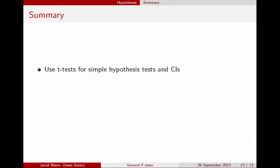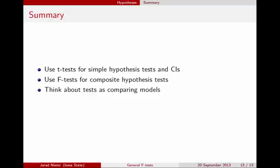To wrap up: use T-tests when testing simple hypotheses about means, for both tests and confidence intervals. Use F-tests when you have composite hypotheses about means. When doing F-tests, think of them as comparing a full versus a reduced model — fit both models and compute a p-value. Later, when we get into two-way ANOVA, SAS and other software will automatically generate a number of these F-tests that might be of interest. Thank you.